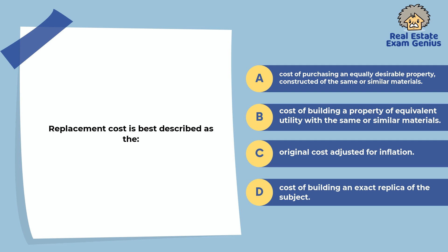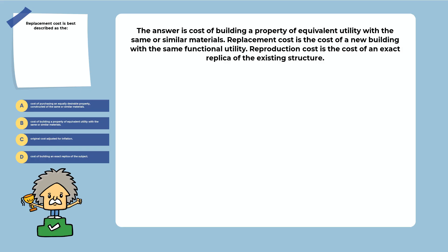Replacement cost is best described as: the cost of purchasing an equally desirable property constructed of the same or similar materials, the cost of building a property of equivalent utility with the same or similar materials, the original cost adjusted for inflation, or the cost of building an exact replica of the subject. The answer is the cost of building a property of equivalent utility with the same or similar materials. Replacement cost is the cost of a new building with the same functional utility. Reproduction cost is the cost of an exact replica of the existing structure.